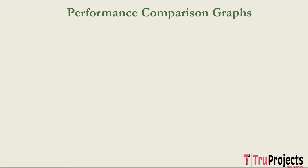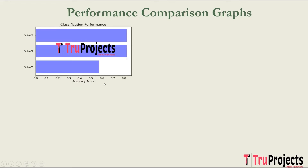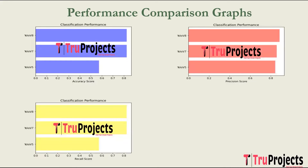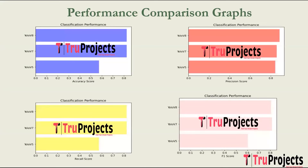We evaluated all the algorithms built in the project and present performance comparison graphs. The accuracy comparison graph shows accuracy scores for each algorithm on the X-axis and algorithm names on the Y-axis. Accuracy measures overall correctness — the ratio of correctly predicted instances to total instances. Precision is the ratio of correctly predicted positive observations to total predicted positives. Recall, also known as sensitivity or true positive rate, measures the model's ability to capture all relevant instances. The F1 score is the harmonic mean of precision and recall, providing a balance between the two, especially when there is class imbalance. The algorithm performing best across all metrics is used for final prediction.